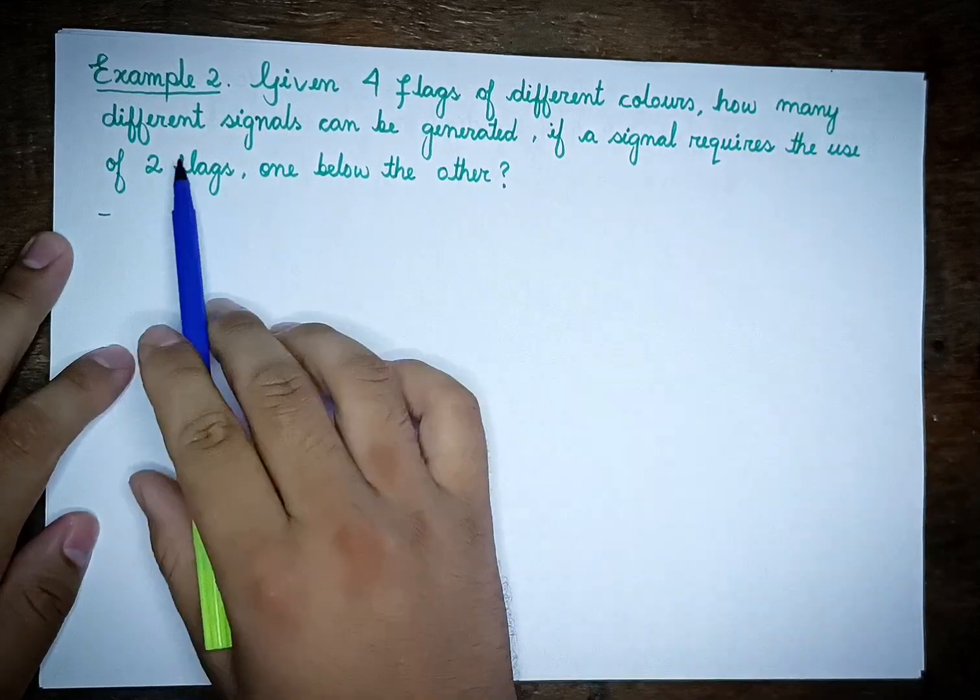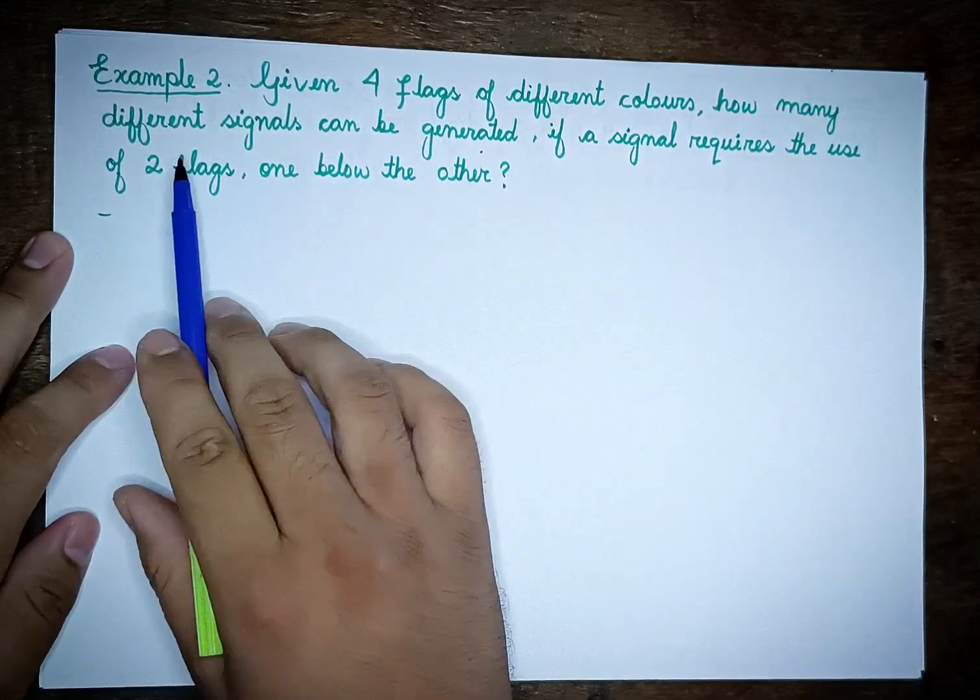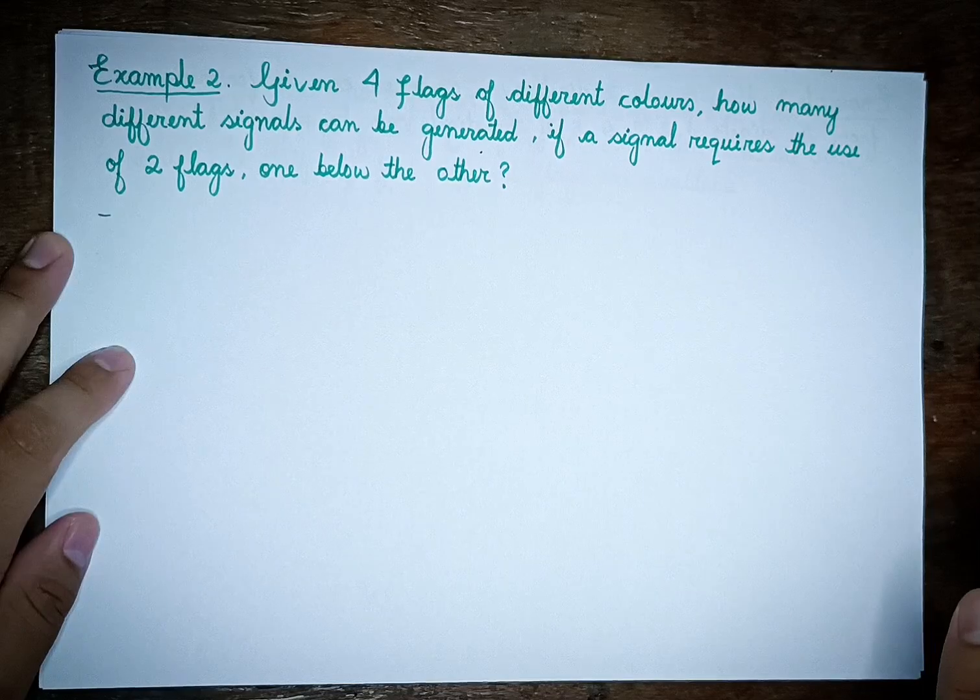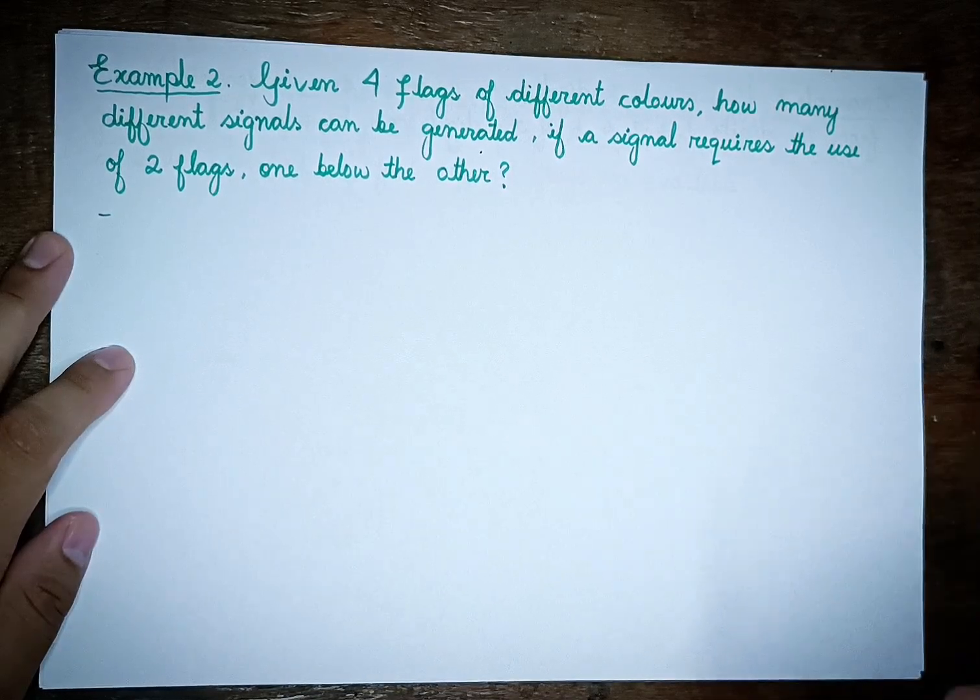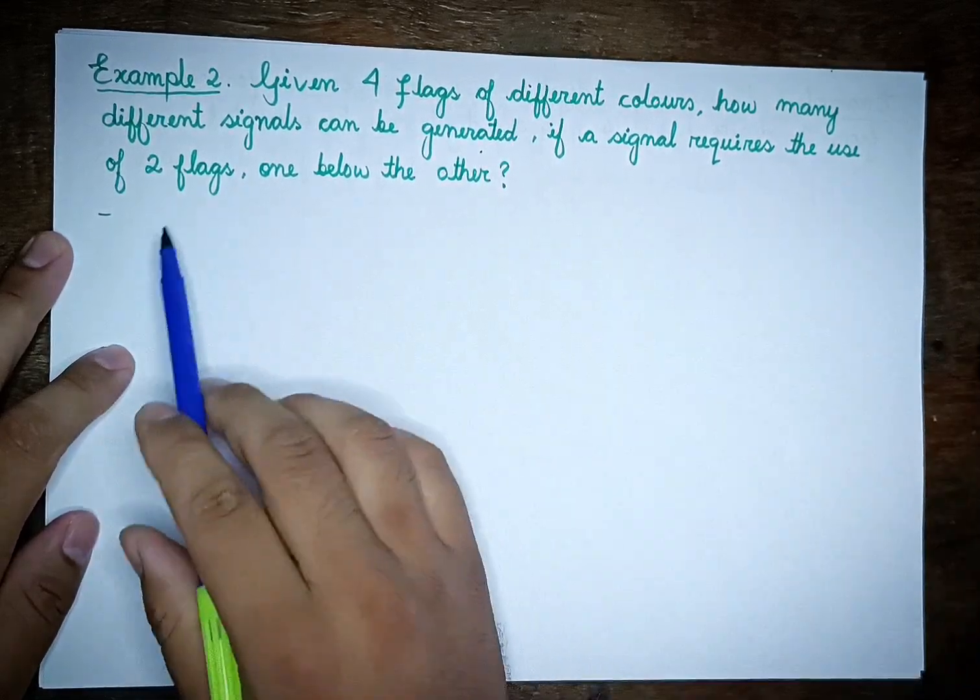How many different signals can be generated? If a signal requires the use of two flags, one below the other, what are the different possible arrangements?